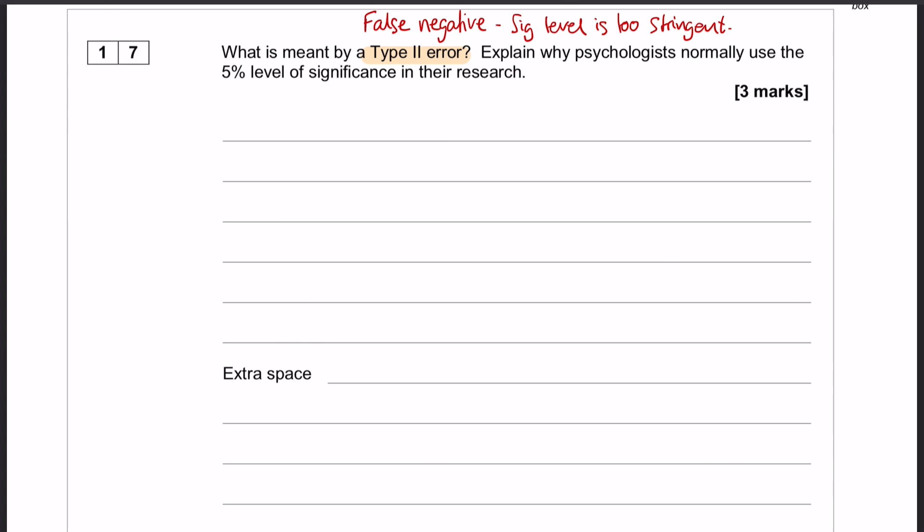The reason psychologists usually use a 5% level rather than a 1% level is exactly for this reason, so that people don't make Type 1 errors or even Type 2 errors.